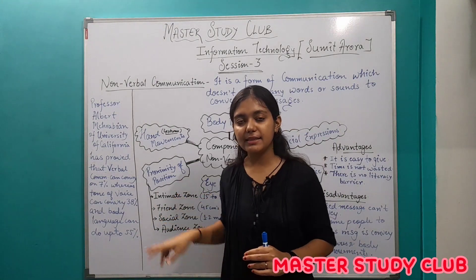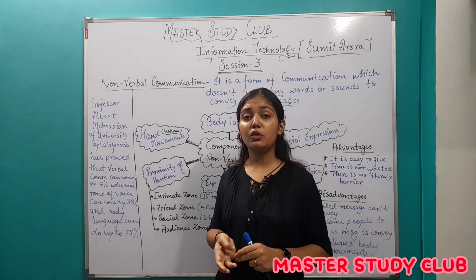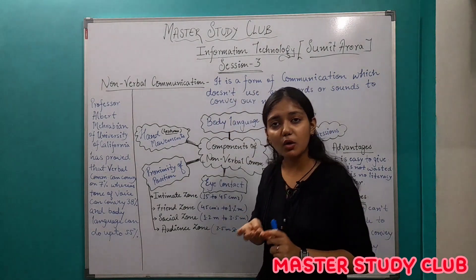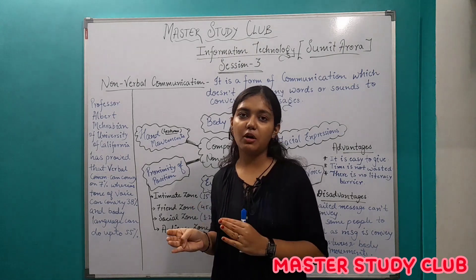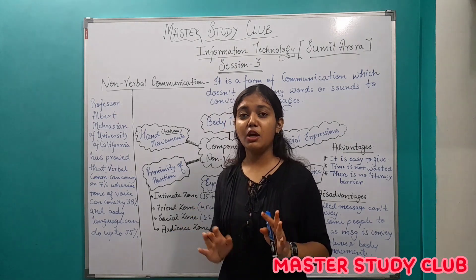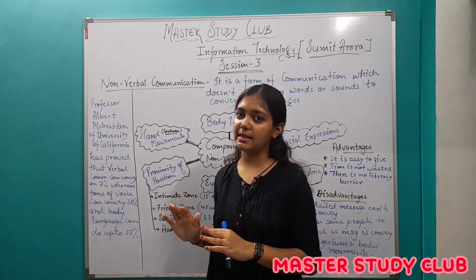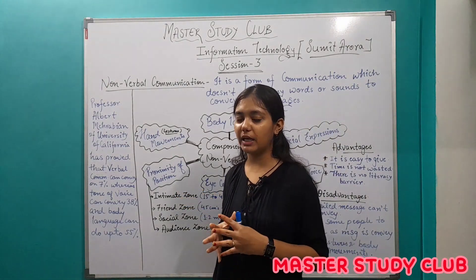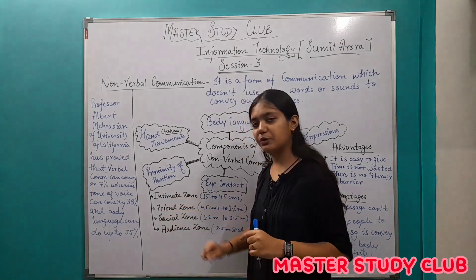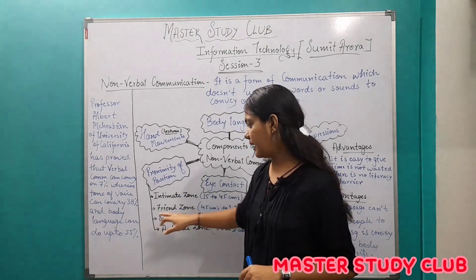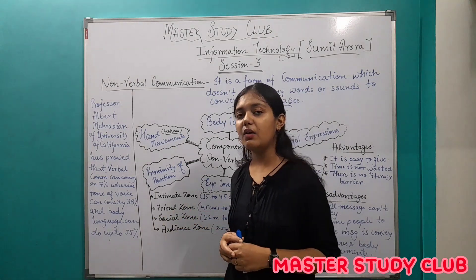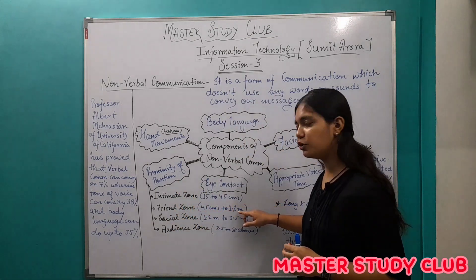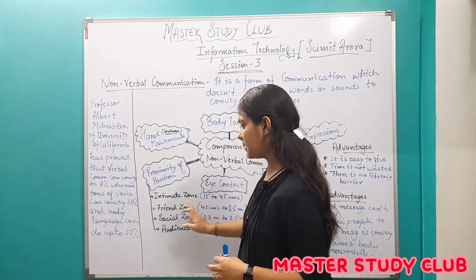The intimate zone is 15 cm to 45 cm — for parents, close friends, and partners with whom closeness is within society's norms and does not feel inappropriate. The second zone is the friend zone. The friend zone includes friends and relatives who are not extremely close but are familiar. This distance ranges from 45 cm to 1.2 meters.